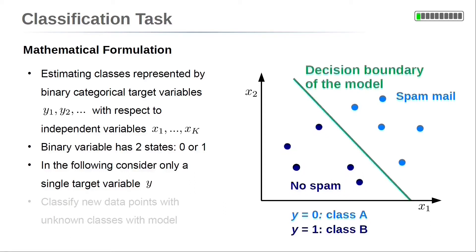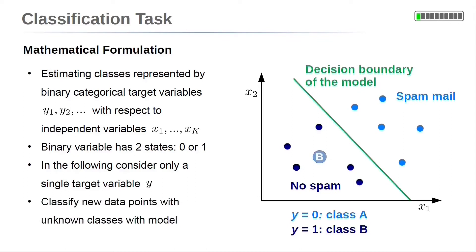A classification model needs a decision boundary to decide between the classes. Such a boundary is sketched by the green line in the picture on the right. Then the model can be used to classify new data points with unknown classes. Here in our example, the new data point is classified as no spam.